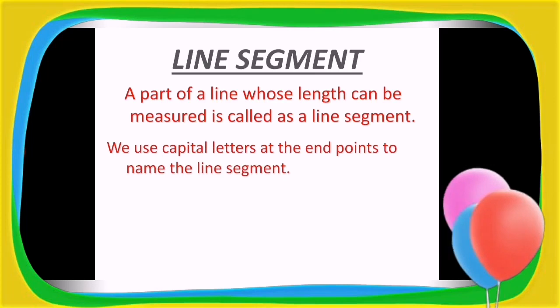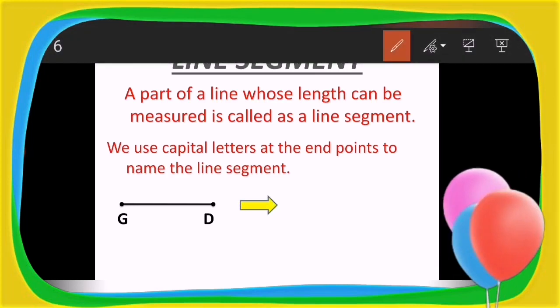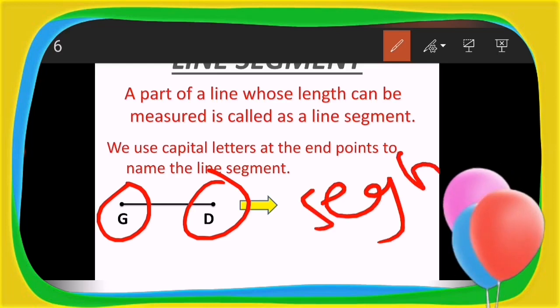So let's start to understand how to write the name of the line segment. Usually we use capital letters at the end points to name the line segment. Example: see at the end points the capital letter is written, correct? G and D at the end points. So the name of the segment is written as seg GD.